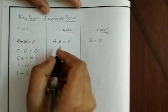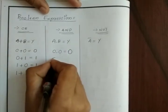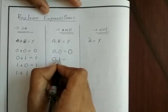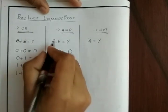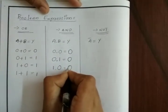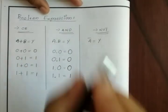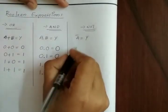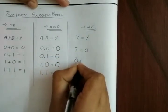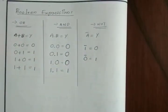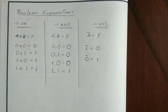For the AND gate: 0 AND 0 equals 0, 0 AND 1 equals 0, 1 AND 0 equals 0, and 1 AND 1 equals 1. So this is the Boolean expression for the AND gate. For the NOT gate: 1 bar is equal to 0 and 0 bar is equal to 1. So these are the basic Boolean expressions you have to understand. In the next video we will talk about NAND and NOR gate. Thank you.